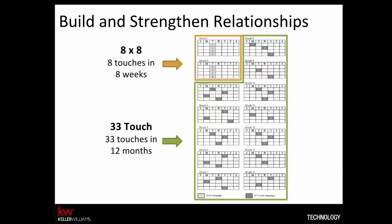Here's what a 14-month calendar looks like when you're marketing to new Mets. The 8x8 campaign is an interval campaign. For example, the first piece goes out automatically one day after the contact is added. The second piece goes out seven days after the first, the third piece seven days after the second, and so on until the eighth week has been sent. By putting your Mets on an 8x8 campaign and then immediately following up with a 33-touch campaign, you'll be reminding them of your value and sending them relevant, useful information 41 times in 14 months.